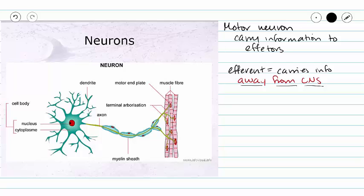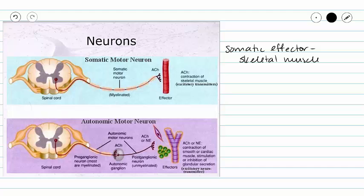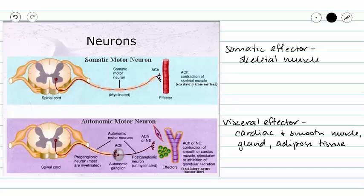The type of effector that we have depends on whether we're talking about the somatic nervous system or the autonomic nervous system. A somatic effector is a skeletal muscle cell, whereas a visceral effector will be a cardiac or smooth muscle cell, gland, or adipose tissue. But regardless of the target or effector, we are carrying out commands initiated by our central nervous system.